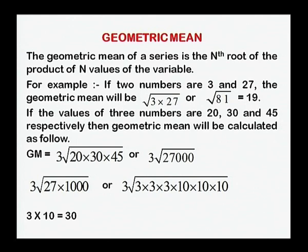If the values of three numbers are 20, 30 and 45 respectively, then geometric mean is calculated as: GM = ∛(20 × 30 × 40). In this way we get ∛27000, which equals ∛(27 × 1000) = ∛(3 × 3 × 3 × 10 × 10 × 10) = 3 × 10 = 30. So 30 is the geometric mean of the three values 20, 30 and 45.